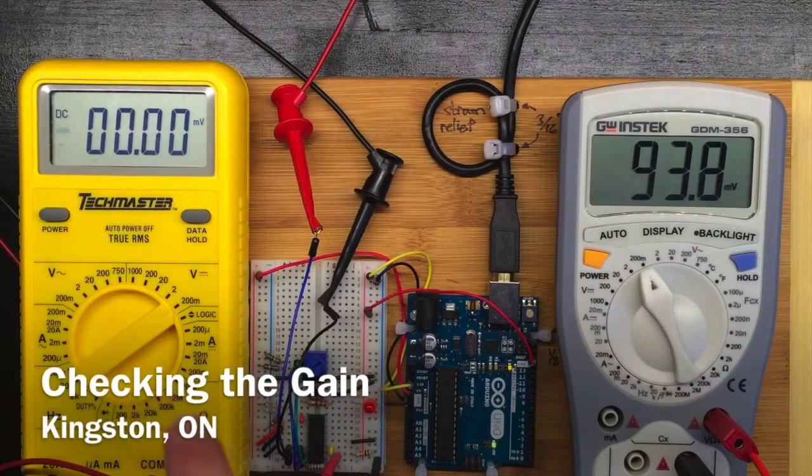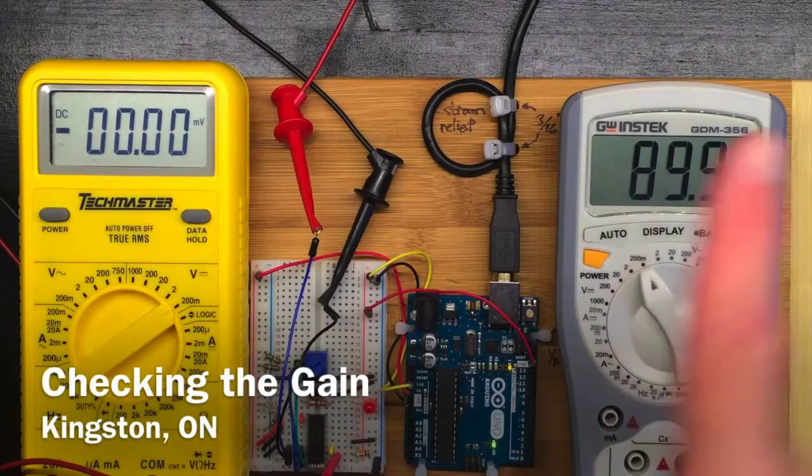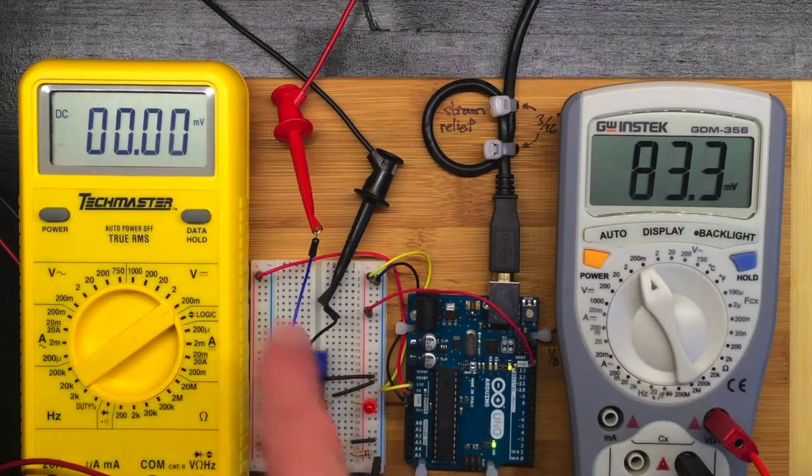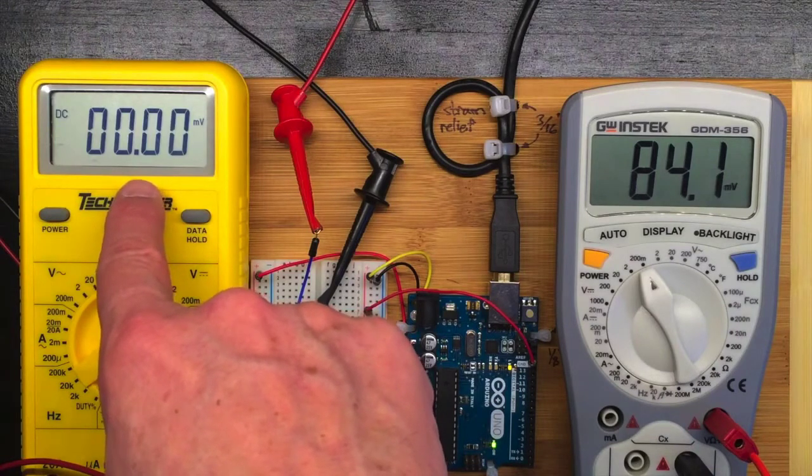With this meter attached to the input of the amplifier, and this meter attached to the output of the amplifier, I can see that when I've got zero volts, give or take, going in.